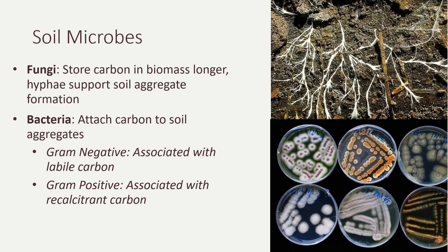Different soil microbes process soil organic carbon in different ways. Fungi store carbon within their biomass for longer periods of time than bacteria do. Also, their hyphal networks support the formation of soil aggregates, which are the structures where soil carbon becomes sequestered. Bacterial mineralization of soil nutrients attaches carbon to these aggregates, protecting it from further processing. Gram-negative bacteria are associated with labile carbon, or carbon that is easily broken down, and gram-positive bacteria are associated with recalcitrant carbon, or carbon that is not easily broken down. In general, higher abundances of soil microbes in the soil supports the sequestration of soil organic carbon.